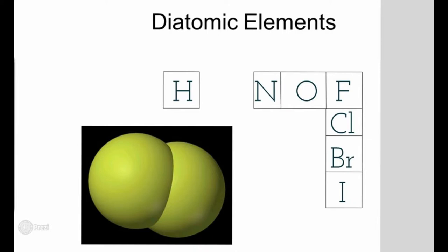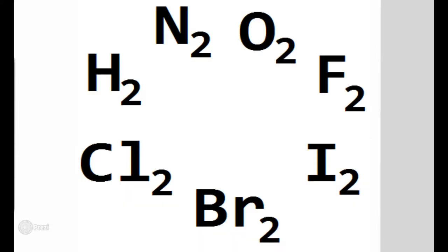Don't get them confused with noble gases — noble gases do not bond with anybody, but these guys can't be by themselves; they have to bond to somebody. You can't have hydrogen by itself — you'll always see it as H₂. You'll see oxygen as O₂. Same thing with nitrogen — you can't see nitrogen by himself; he has to be bonded to somebody. If not bonded to another element, he'll bond to one of his own and be N₂. That's what it means to be diatomic — same with fluorine, chlorine, bromine, and iodine.